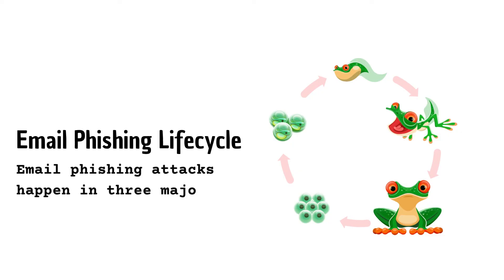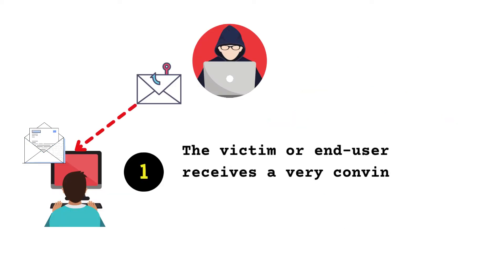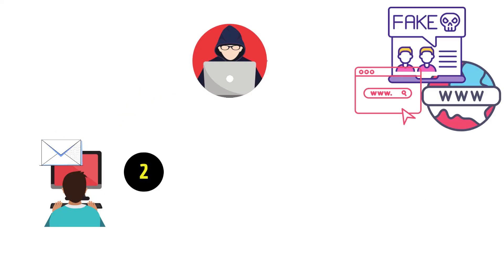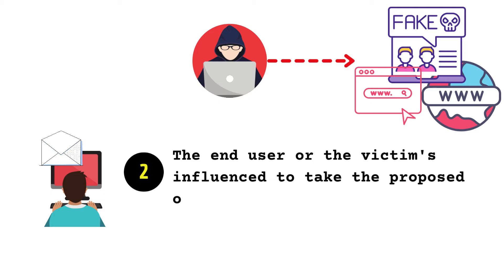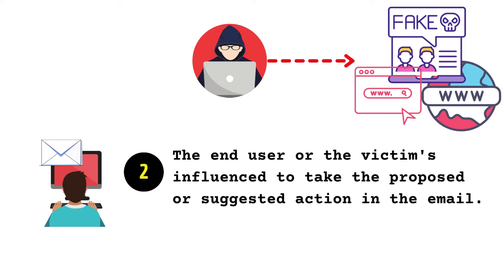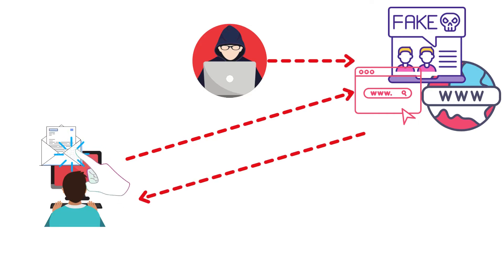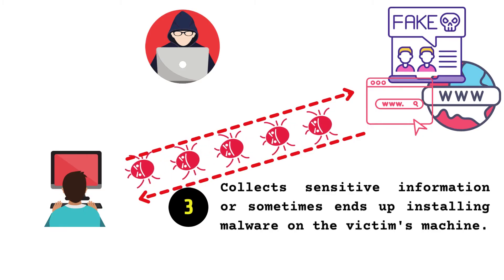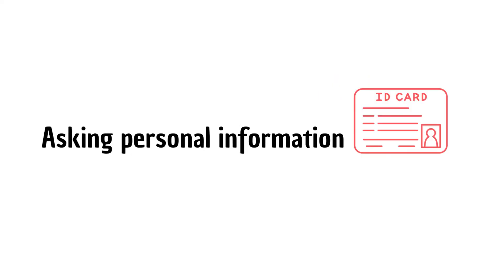Email phishing attacks happen in three major steps. First, the victim receives a very convincing email from an attacker or malicious actor. Second, the victim is influenced to take the proposed action in the email. Third, once the victim acts or clicks on the link, they are taken to a bogus website that collects sensitive information or ends up installing malware on the victim's machine.